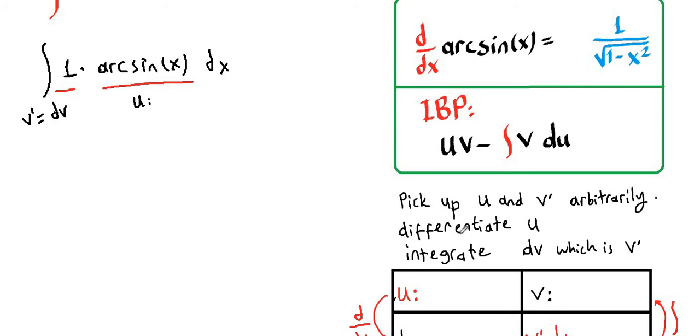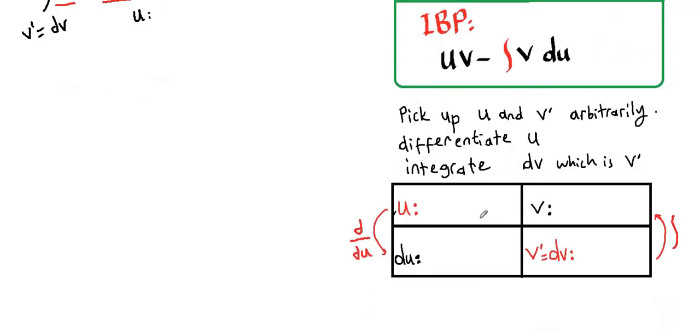Now we are going to apply integration by parts formula. Just before that, we are going to make our table. Our u was arcsin(x), so derivative of arcsin(x) is 1 over square root of 1 minus x squared dx. Our v prime is 1 dx, so integral of 1 dx with respect to x is x.